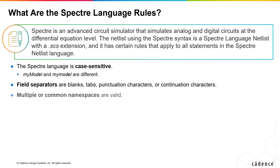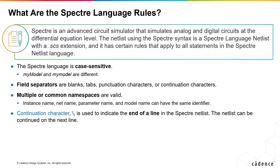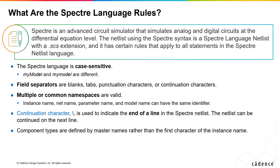The Spectre simulator accepts multiple or common namespaces, so an instance name, net name, parameter name, and model name can all have the same identifier. In a Spectre NETLIST, the end of line is typically denoted by the continuation character backslash, and component types are defined by master names rather than the first character of the instance name. Hierarchical nodes are also supported in Spectre with a period or dot delimiter.